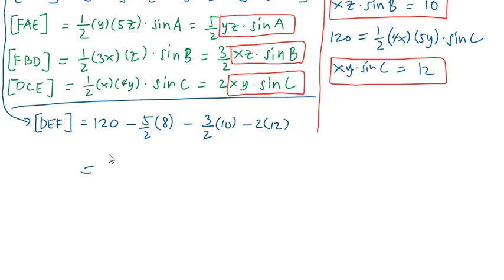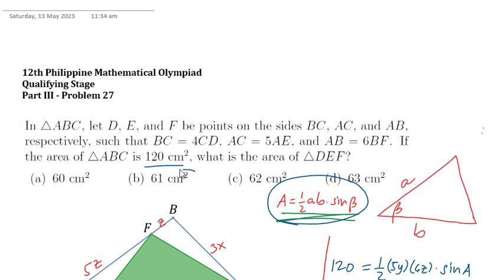Simplifying further, we have 120 minus 20 minus 15 minus 24, and so the area of triangle DEF is 61 centimeters squared, and that is letter B.